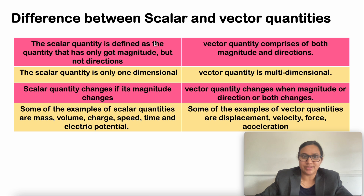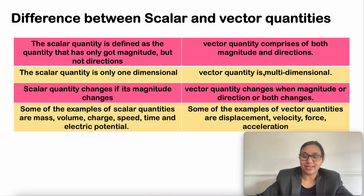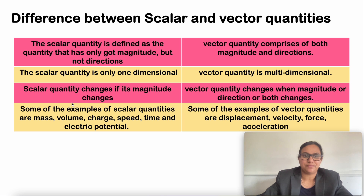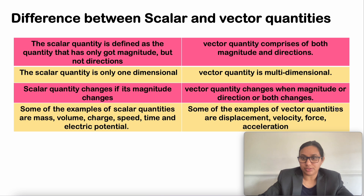A scalar quantity is defined as a quantity that has only magnitude but no direction, whereas a vector quantity comprises both magnitude and direction. Scalar quantities are one-dimensional, but vector quantities are multi-dimensional. A scalar quantity changes only if its magnitude changes, but a vector quantity changes when magnitude, direction, or both change. Examples of scalar quantities: mass, volume, charge, speed, time, and electric potential. Examples of vector quantities: displacement, velocity, force, and acceleration. Find out some more on your own.